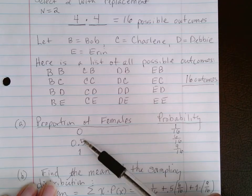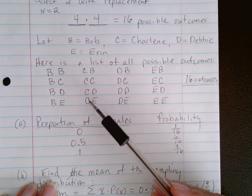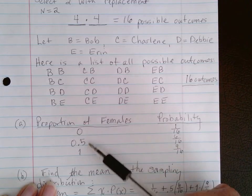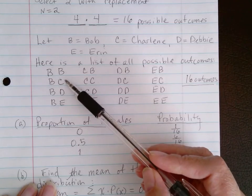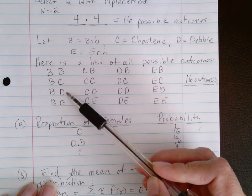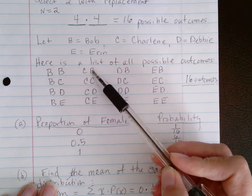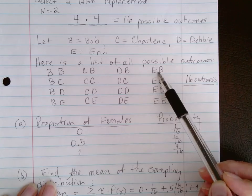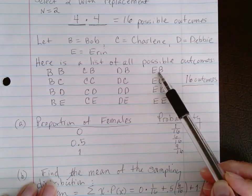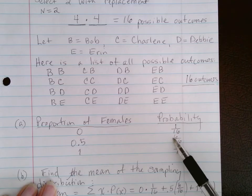Let's go through and count how many of these outcomes consisted of only one female, so half females. Let's look at the ones that have a B in it. Here's one, two, three, four, five, six. There's six outcomes out of these 16 where there was one male and one female.